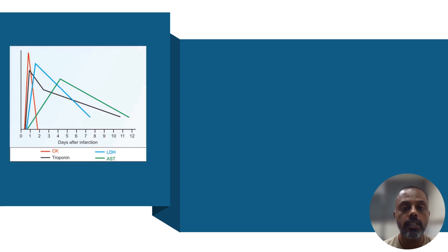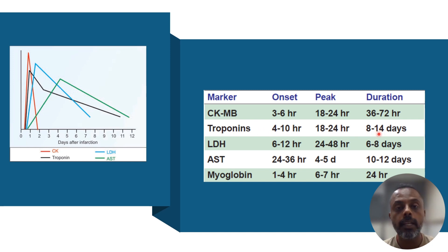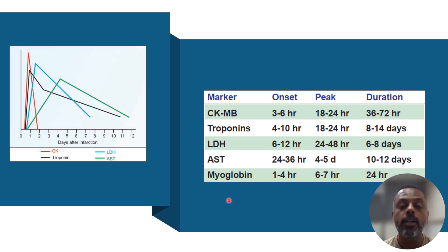Regarding the timing of elevation of these markers: CPK-MB starts rising at 3 to 6 hours and remains elevated for 36 to 72 hours. Troponins start rising at 4 to 10 hours and remain elevated for 8 to 14 days — troponin I remains elevated for 7 days while troponin T remains elevated for 14 days. LDH begins to rise at 6 to 12 hours and remains elevated for 6 to 8 days. AST starts rising at 24 to 36 hours and remains elevated for 10 to 12 days. Myoglobin is the earliest marker to rise in MI, starting at 1 to 4 hours, before CPK-MB and troponin, and remains elevated for 24 hours, but is not a good marker because it also increases in muscle diseases.